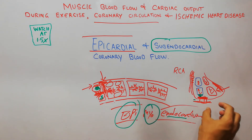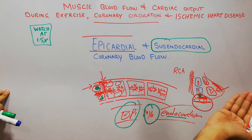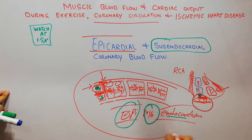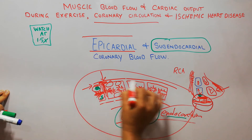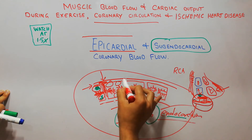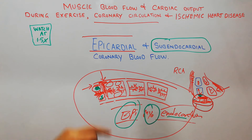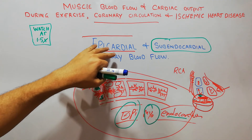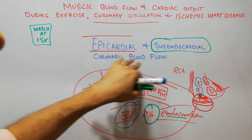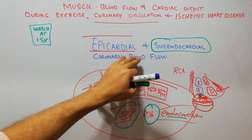This portion of the heart has been enlarged in the diagram. The epicardial blood vessel is visible, along with the penetrating intramuscular branches, and finally the endocardial or subendocardial blood vessels. So coronary circulation to the heart consists of epicardial blood vessels and subendocardial blood vessels — the epicardial coronary blood flow and subendocardial coronary blood flow.